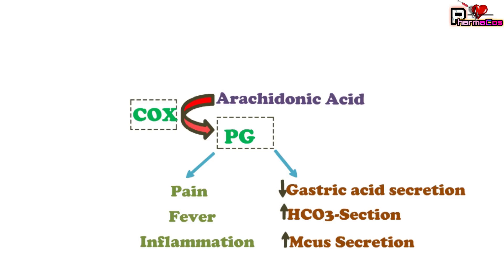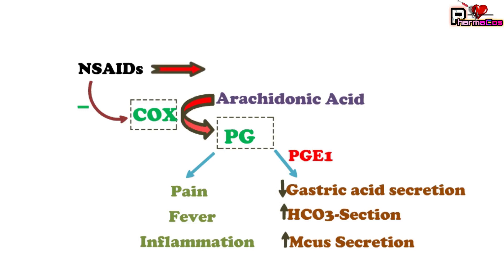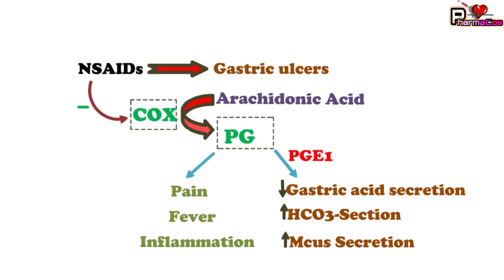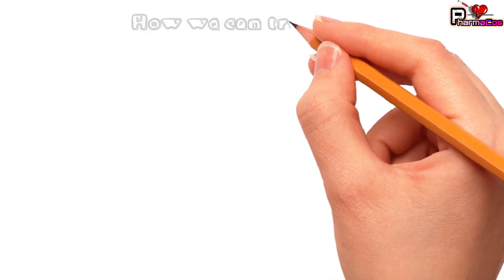When drugs such as NSAIDs — non-steroidal anti-inflammatory drugs — are used, they inhibit the COX pathway, thereby inhibiting prostaglandins. As prostaglandins are not synthesized, NSAIDs can reduce pain, fever, and inflammation. But at the same time, they also inhibit protective prostaglandins like PGE1, thereby increasing gastric acid secretion — that is why NSAIDs can induce gastric ulcers.